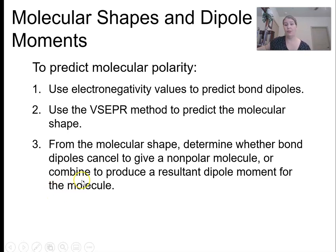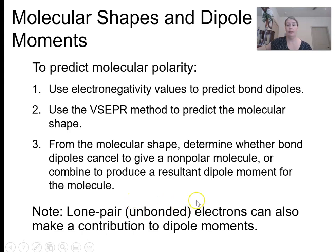If they cancel each other out, I get a nonpolar molecule. If they don't, I have a polar molecule. Notice that lone pair electrons on that center atom. You have to keep them in mind when you're doing the VSEPR method. That also is something you have to keep in mind when you're thinking about dipole moments because that is negative charge.